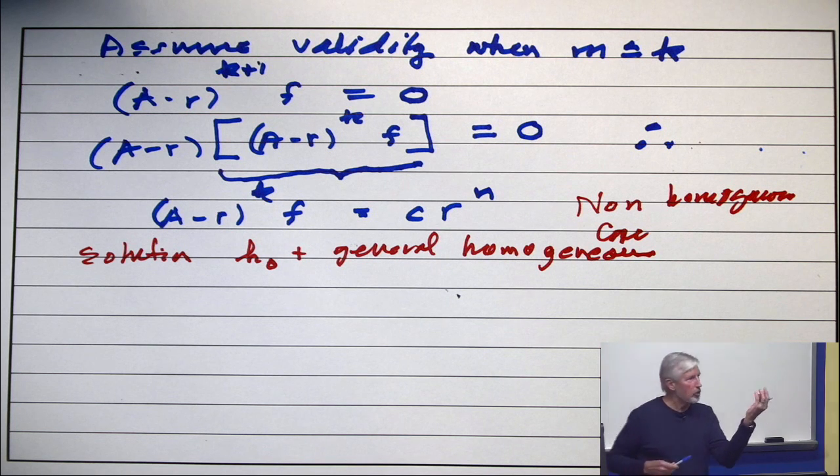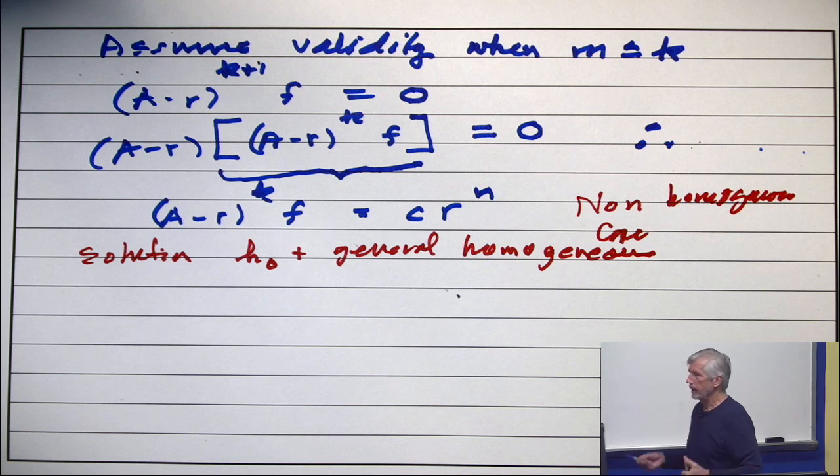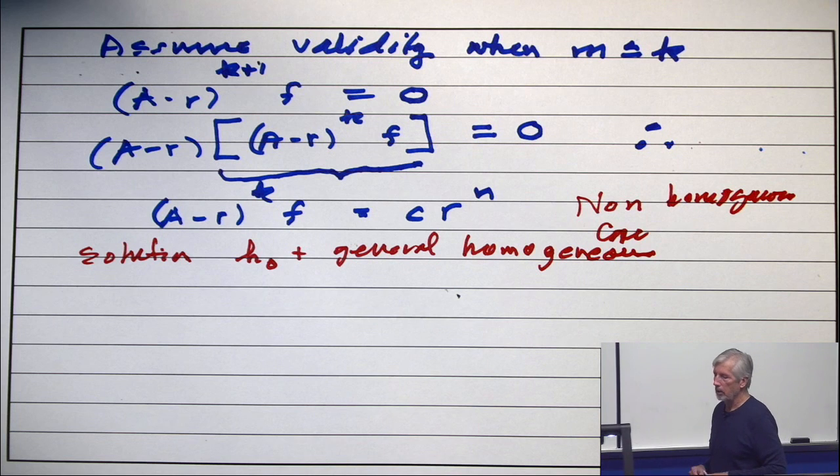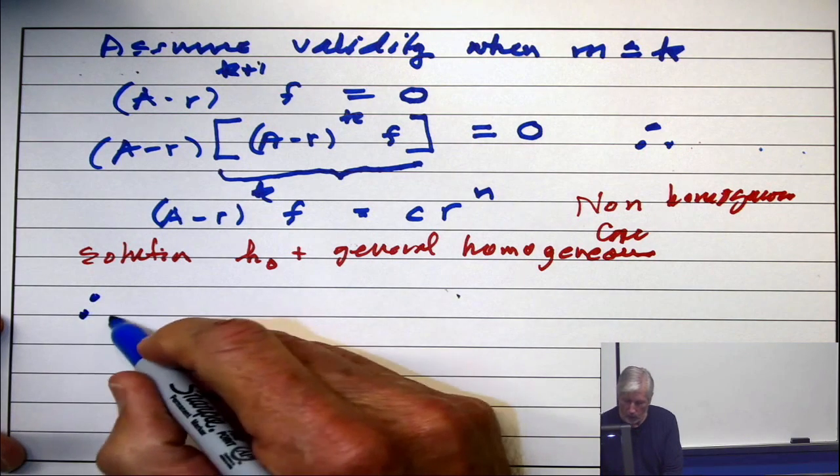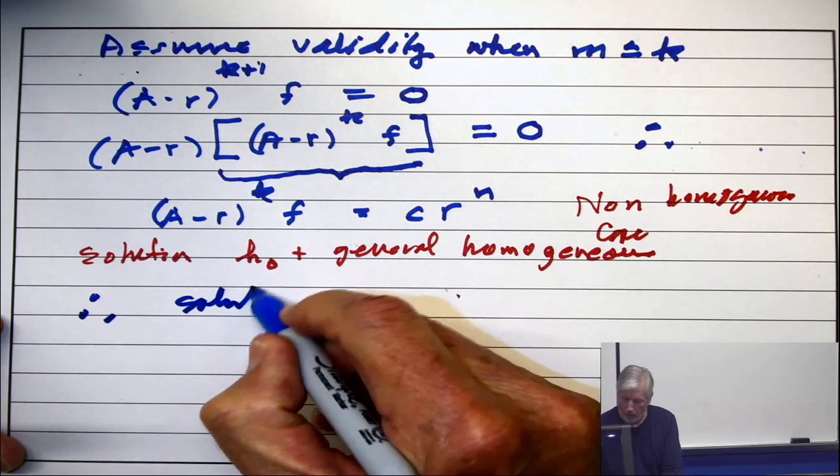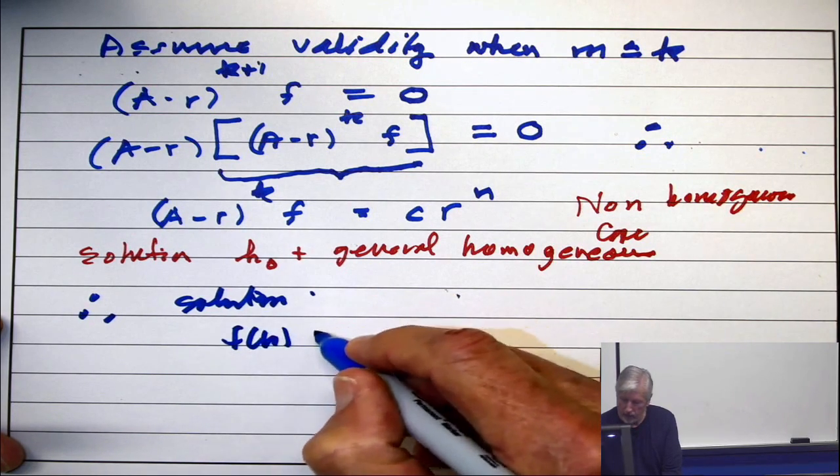Now, all this stuff other than the term n to the k r to the n is killed off as part of the general solution. And so the conclusion is that the actual solution has the form f of n is a polynomial where the biggest term involves n to the k times r to the n.